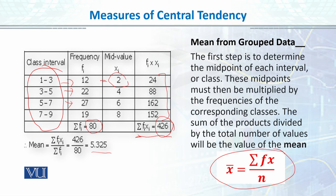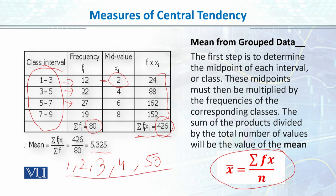Now, mean is mostly what we use, but in every type of condition mean may not be the appropriate measure. For instance, if I have data with extreme values — for example, data points 2, 3, 4, and then 50 — I know that the majority of the data is scoring below 5, but one student has an extremely high score of 50. When I have such a distribution where there are a few extreme scores in the data, then mean might not be a very good choice to report central tendency in the data. Because even though the majority is below 5, and the mean should be around there, the extreme value pulls the mean up significantly.